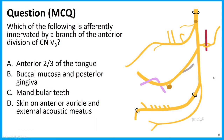Let's take a question now. Which of the following is afferently innervated by a branch of the anterior division of V3? Is it: A) the anterior two-thirds of the tongue, B) the buccal mucosa and posterior gingiva, C) the mandibular teeth, or D) the skin on the anterior auricle and external acoustic meatus? Take a second to make your choice and then check in when you're ready.